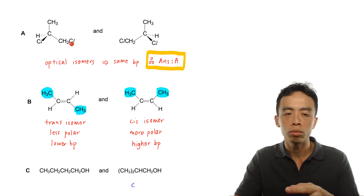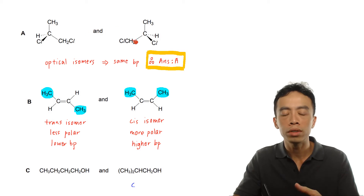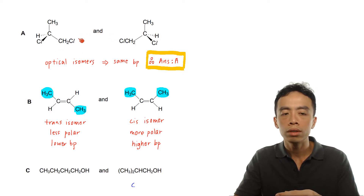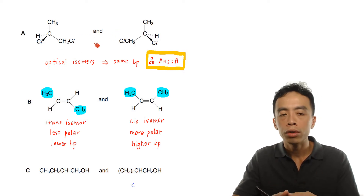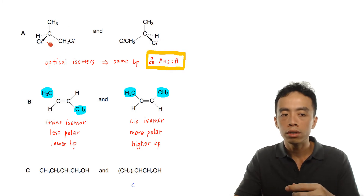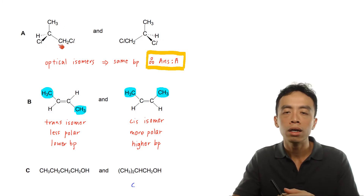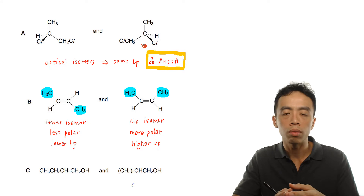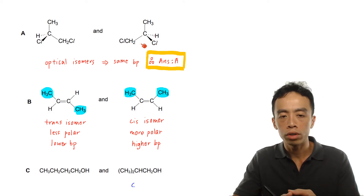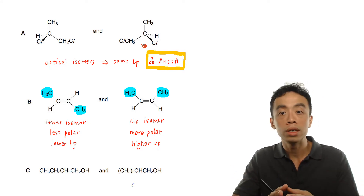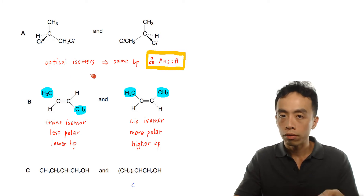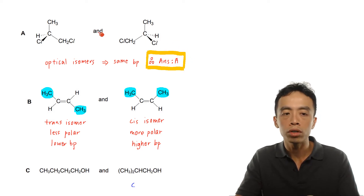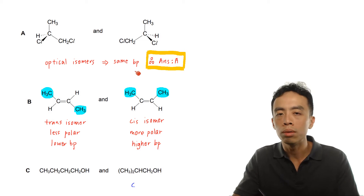Optical isomers have identical physical properties — same density, same melting point, same boiling point. The only physical difference is optical activity: the ability to rotate plane-polarized light. For example, if one isomer rotates light 5 degrees clockwise, the mirror image rotates it 5 degrees counterclockwise — same extent, opposite direction. So the answer is A, because optical isomers have identical boiling points.